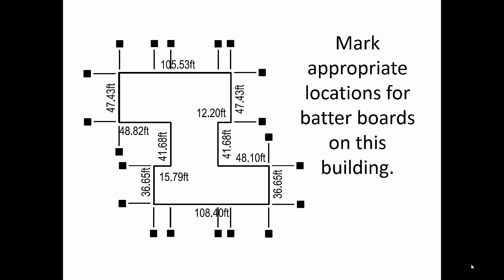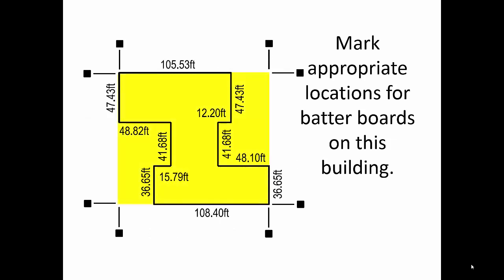That's really too many stakes to be practical. So, what we will often do at the request of the contractor, we will stake what we call the minimum rectangle. That is, we will stake offsets for four corners of the smallest rectangle that completely encompasses the building footprint. Really, that rectangle is defined this way. You can see on the southeast corner of the building, the 36.65 foot side and the 108.40 foot side form one corner of the rectangle. And at the northwest corner, the two sides are 105.53 by 47.43.